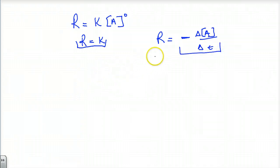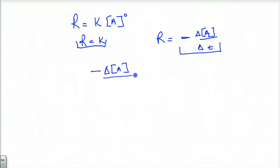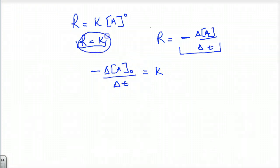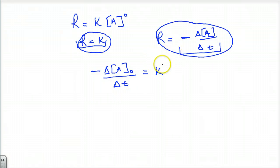I can make those equal to each other. So: negative d[A₀]/dt equals K. This is called a differential equation. Derivatives and differential equations really link relationships and equations together to get bigger relationships — they allow you to connect different formulas into a larger scope.